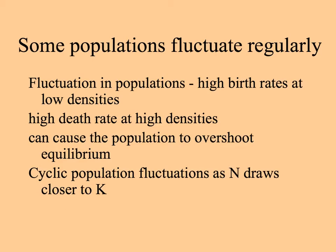Some people might say the monarchs are declining because forests are disappearing, and certainly that's a factor. But even with constant habitat available, populations may fluctuate, and many species have regular population fluctuations. These are caused by high birth rates when population size is low, and when density gets high, the death rate is high. This can cause the population to go over the carrying capacity — the equilibrium number — causing cyclic fluctuations as population size goes above and below, getting closer to the carrying capacity.